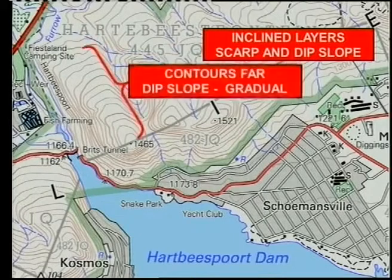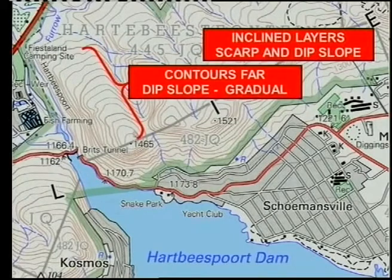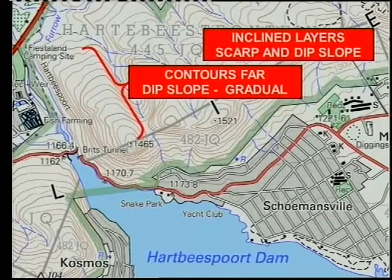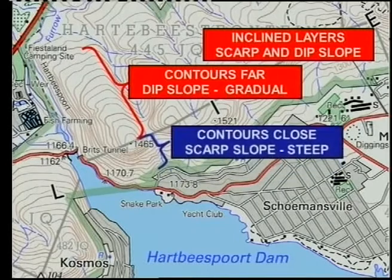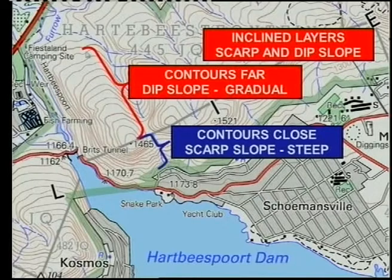You should have noticed that the slope towards the northern part of the map has contours that are much further apart than on the southern part. This means we've got a gradual slope on that side and a steep slope on the other side.